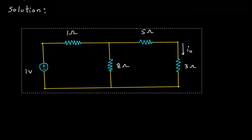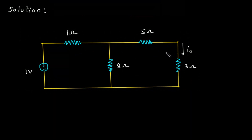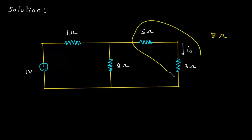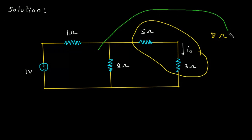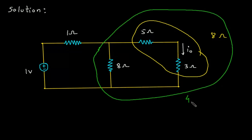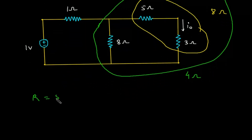Now we have to find I.O. This is very simple. This 5 Ohm and 3 Ohm are in series, so this will be 8 Ohm. Now this 8 Ohm parallel with 8 Ohm, so this will be 4 Ohm. Now this 4 Ohm is in series with 1 Ohm, so this will be 5 Ohm. So now we have the value of resistances: R is equal to 5 Ohm.